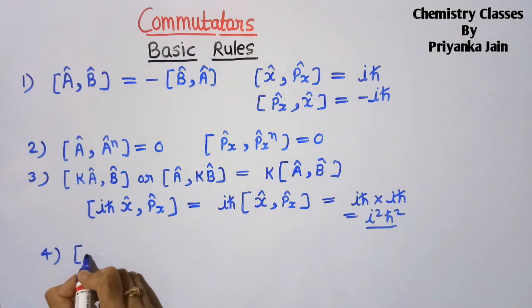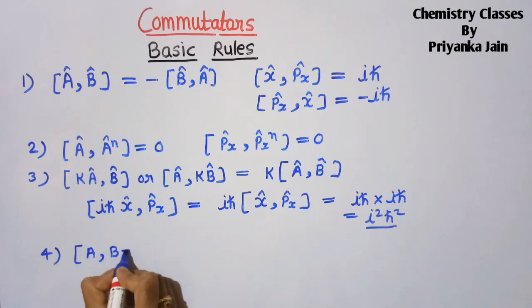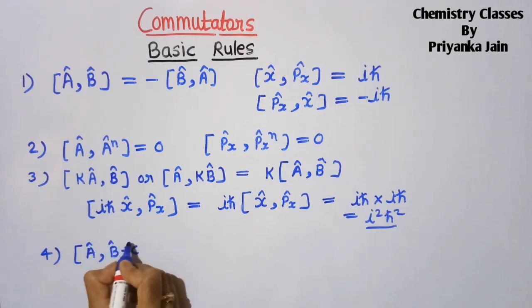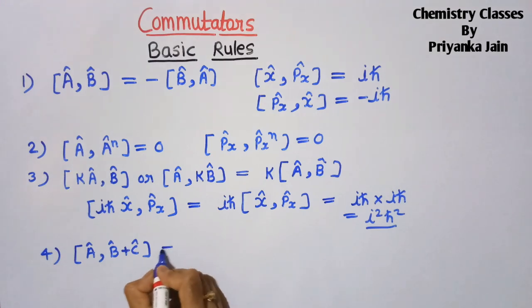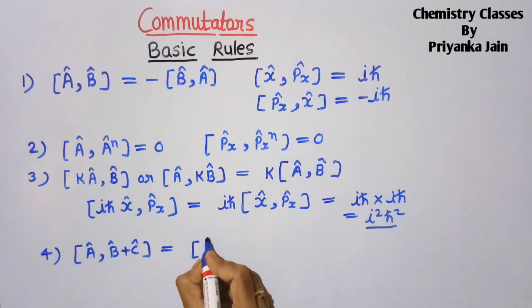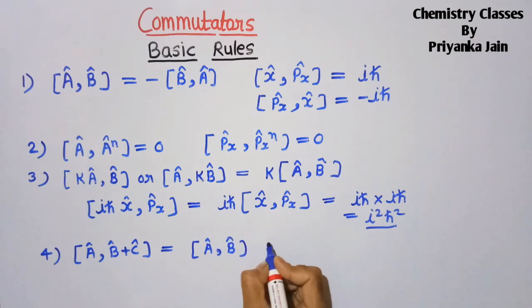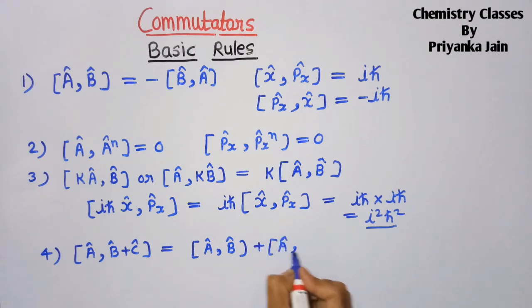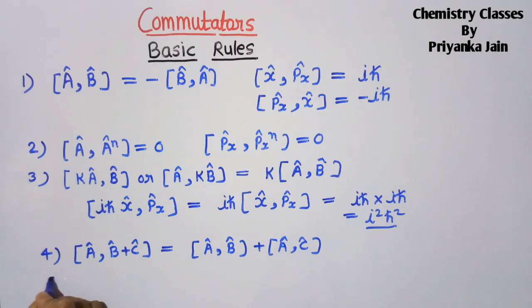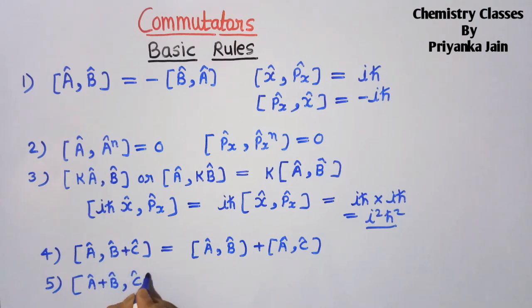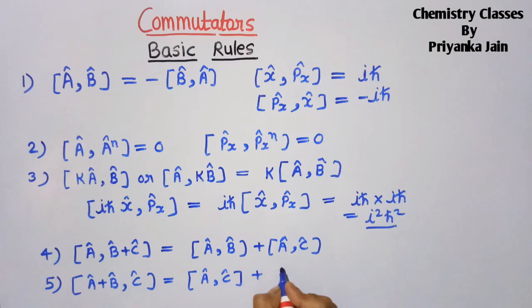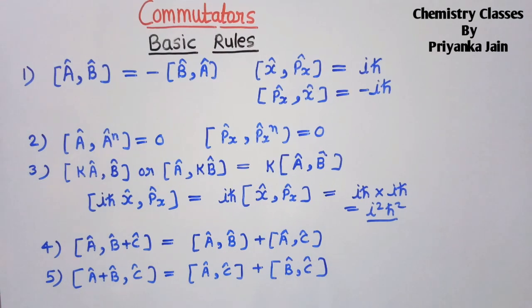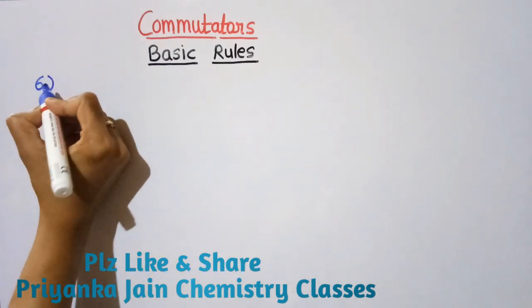Rule 4 (distributive property): If we have [A, B+C], this equals [A, B] + [A, C]. Similarly, the commutator [A+B, C] equals [A, C] + [B, C].